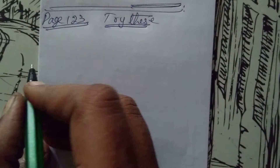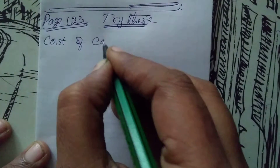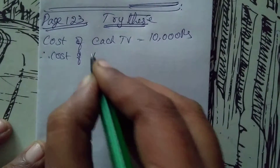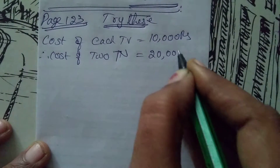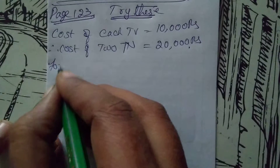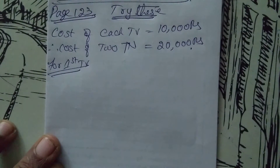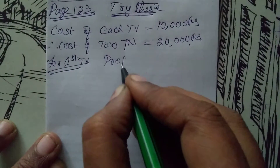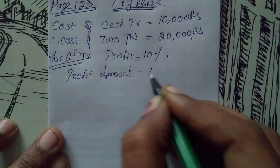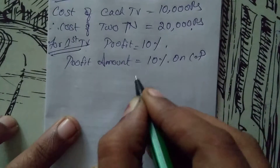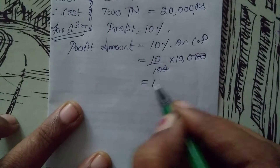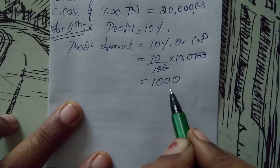The shopkeeper bought 2 TV sets. Cost of each TV is rupees 10,000. Therefore cost of 2 TVs is rupees 20,000. For the first TV, profit is 10%, so profit amount equals 10% on cost price: 10/100 into 10,000. Two zeros get cancelled; 10 into 100 is 1,000. He got a profit amount of rupees 1,000.